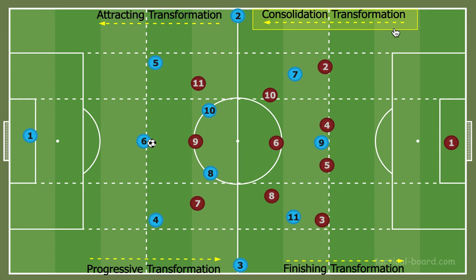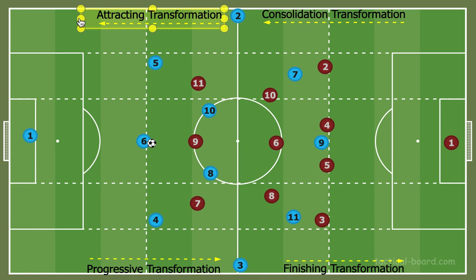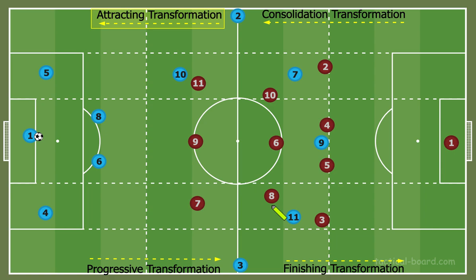I label this last phase the 'attracting transformation,' because playing into an area of depth — like back to your goalkeeper — means you're looking to attract the press or gain stability. By attracting the press, you need your players to be as close together as possible while still taking up the maximum amount of space to exploit. The attracting transformation means playing into a position of depth, and we can look at the shape it creates for us.